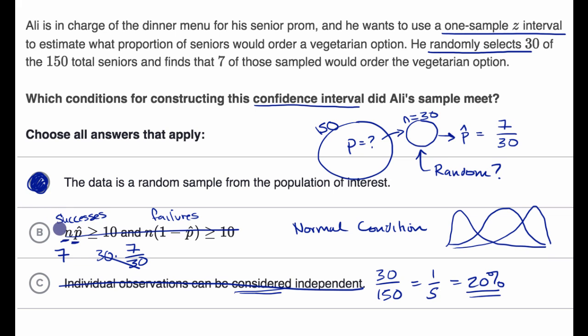And so since we're not meeting two of the three constraints for, I would say, valid confidence intervals, or confidence intervals we would feel confident in, this is not so good of an analysis on Ali's part.